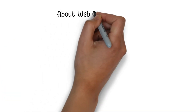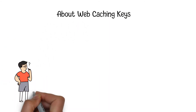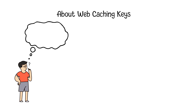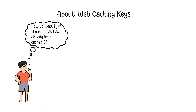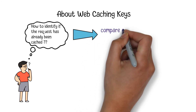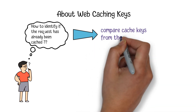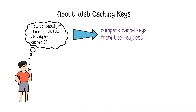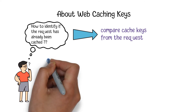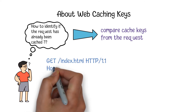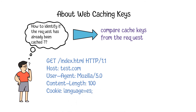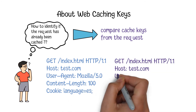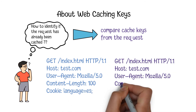When we implement web caching, one of the crucial parts is to identify if a request has already been cached. Nowadays, the most popular way to do that is via comparisons of cache keys from the request. Usually, one HTTP request will contain a bunch of key-value pairs, and we can pick a group of those keys as the criteria to identify if two requests are the same.